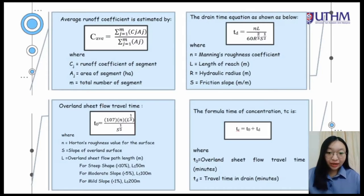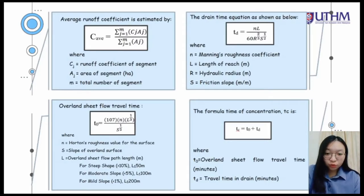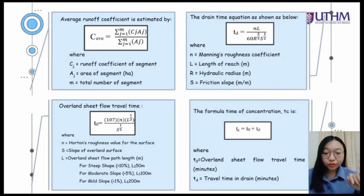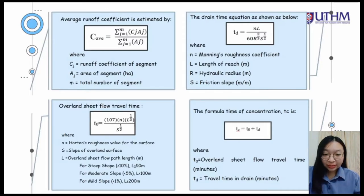The overland sheet flow travel time T0 is the movement of water over land down slope towards the surface water body, where T0 equals 107 times the Holden-London's value times the overland sheet flow path length to the power of 1/3, divided by the slope of overland surface to the power of 1/5, with L less than or equal to 50 meters. The drain travel time Td equals Manning's coefficient times the length of drain divided by 60 times the hydraulic radius to the power of 2/3 times the friction slope to the power of 1/2. The time of concentration Tc is the time between rainfall landing on the catchment and water reaching the point of the drainage system, with equation Tc equal to T0 plus Td.